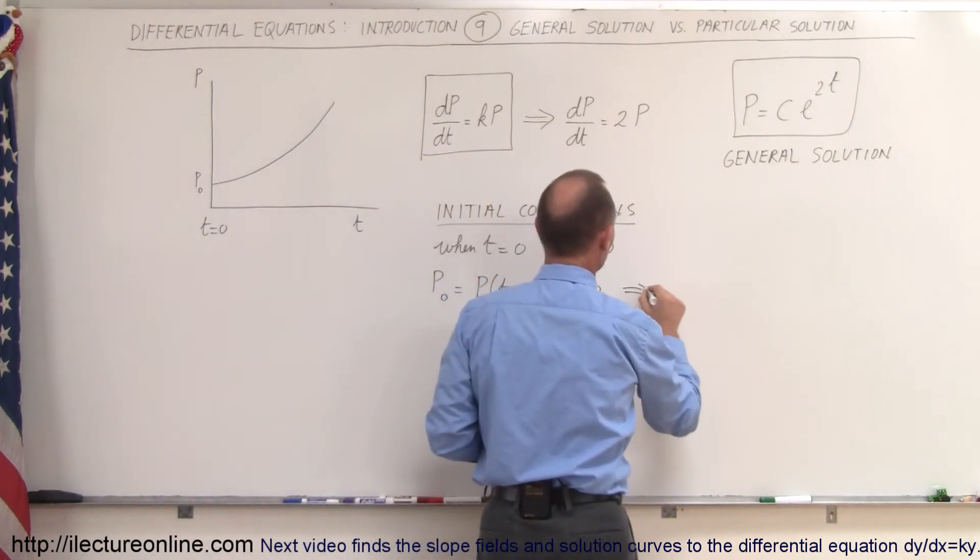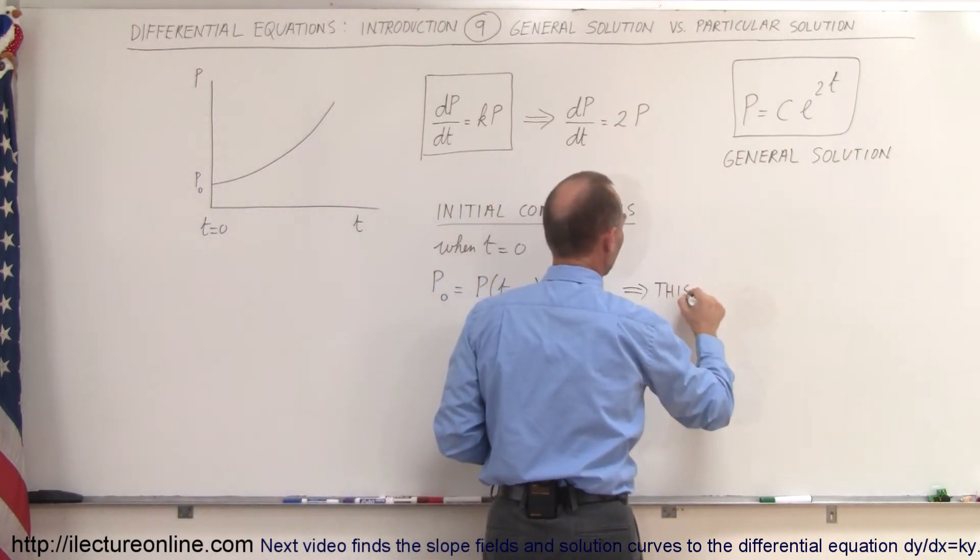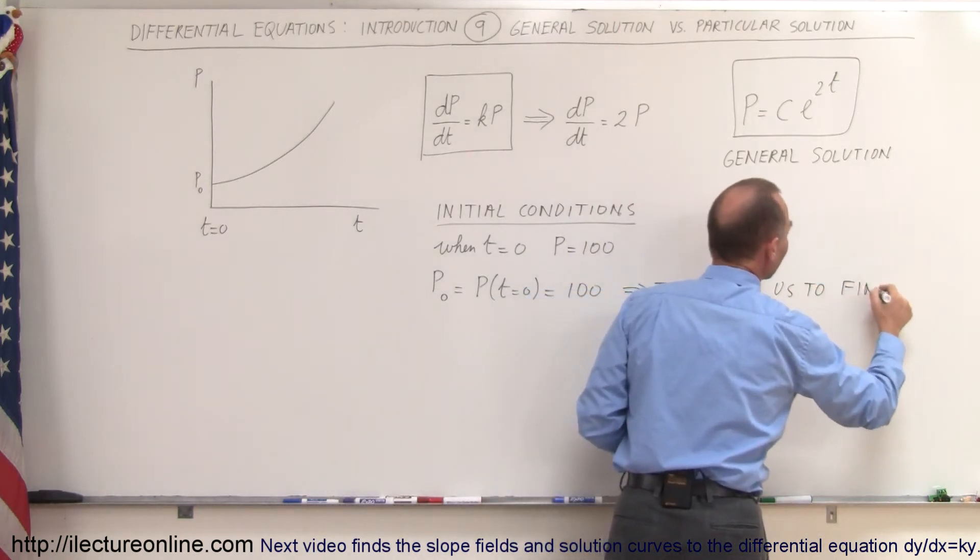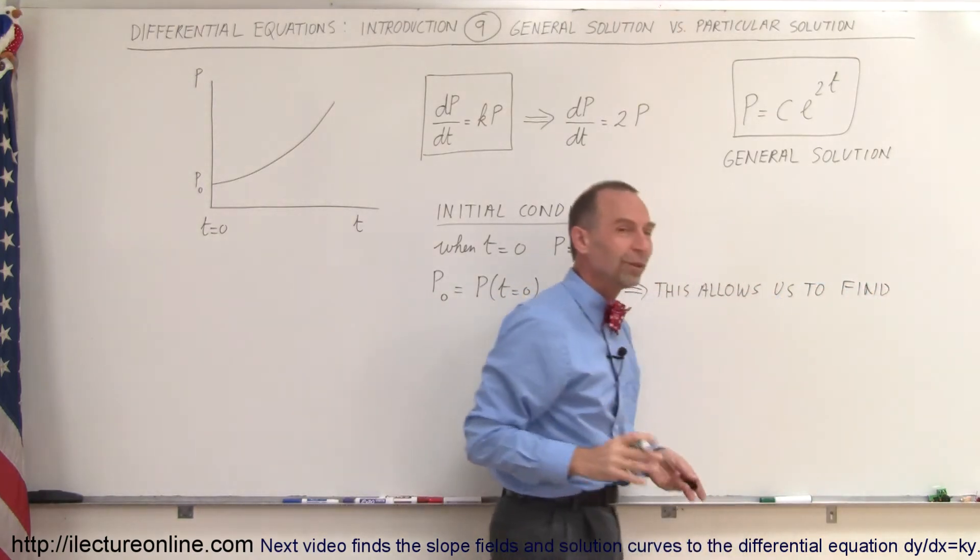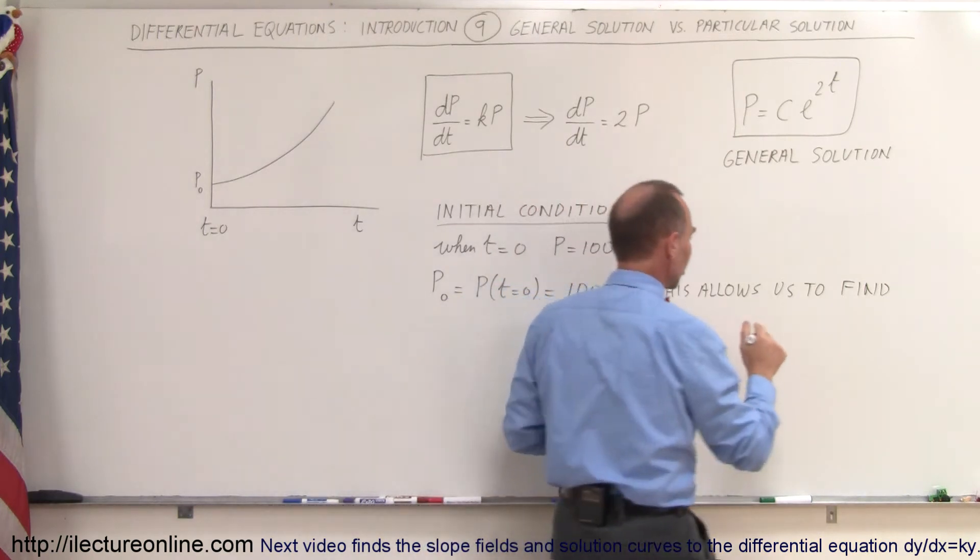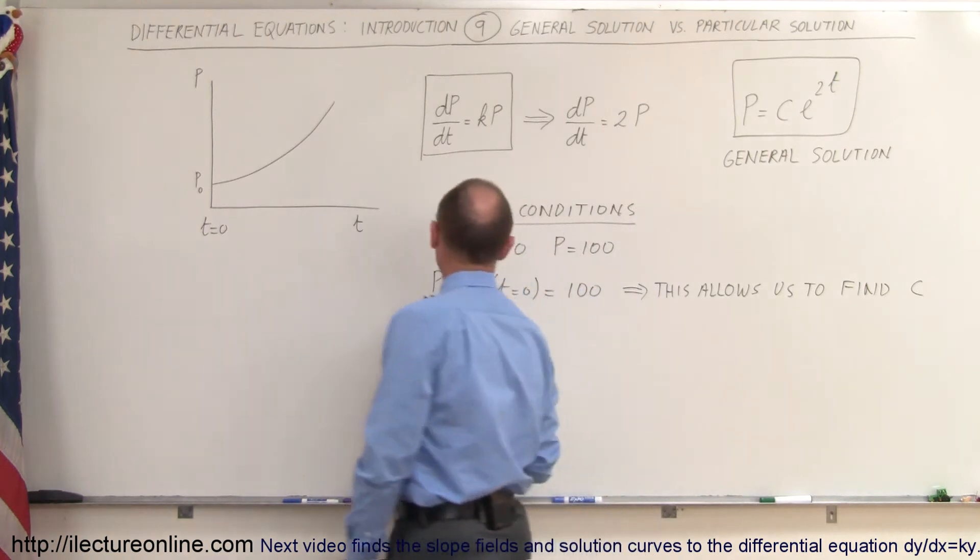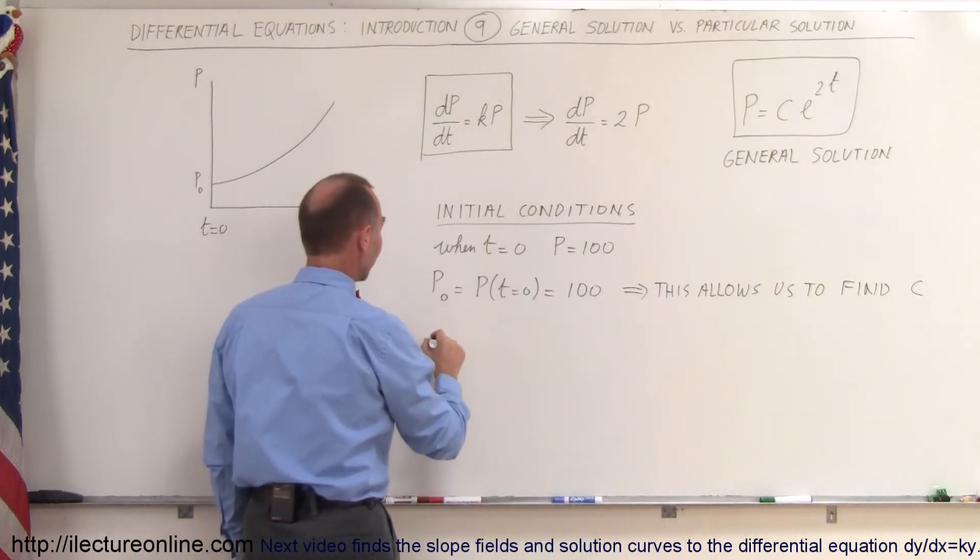So this, in this way, this allows us to find c. And once we find c, we no longer have the general solution, we then have what we call the particular solution. We'll see that in just a moment. So to find c. All right, so we'll take our equation, we'll solve for c by saying this.